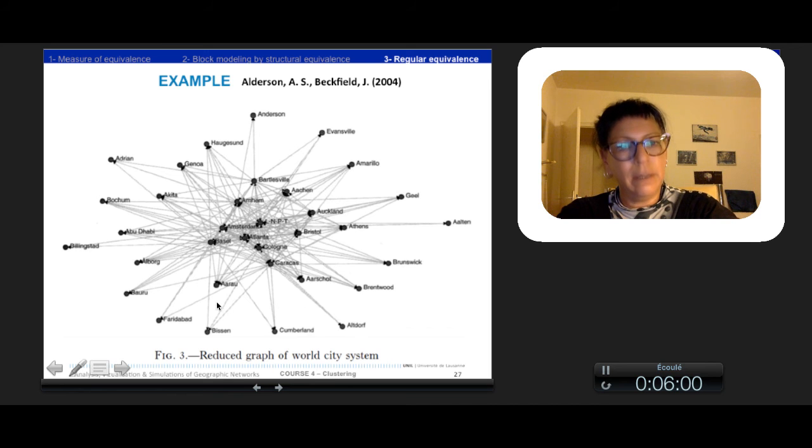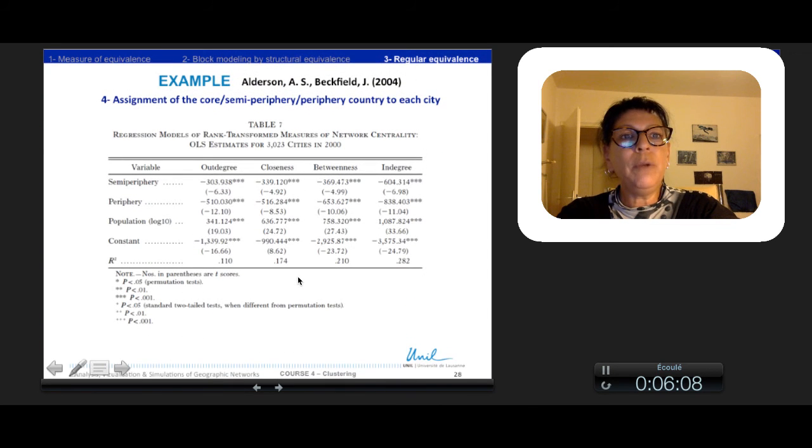So this is the image of the reduced graph formed by the different blocks of the model. With this, they assigned the core, semi-periphery, and periphery status respectively to each city.